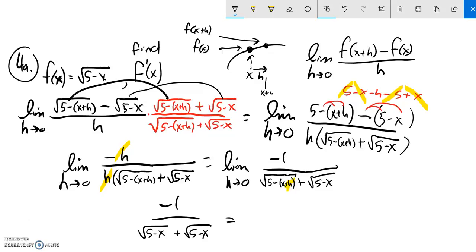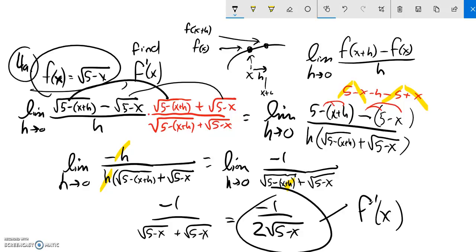So I have negative 1 over square root of 5 minus x plus square root of 5 minus x. Oh, I just have two of those. So I can rewrite this as negative 1 over 2 square root of 5 minus x. And there's my derivative as a function. So if I have this function, the derivative of it at any x is that.